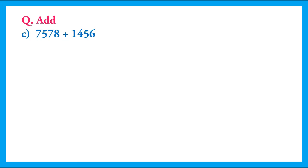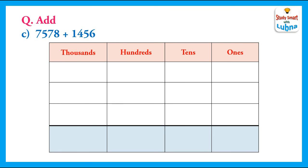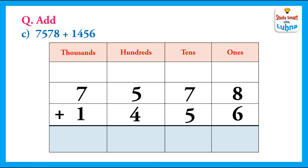Another example. Here we have to add 7578 and 1456. We will write these 4-digit numbers below their place values. Now we will add them. 8 plus 6 equals 14. So we will regroup the ones and write 4 in the ones column and carry 1 to the tens column.